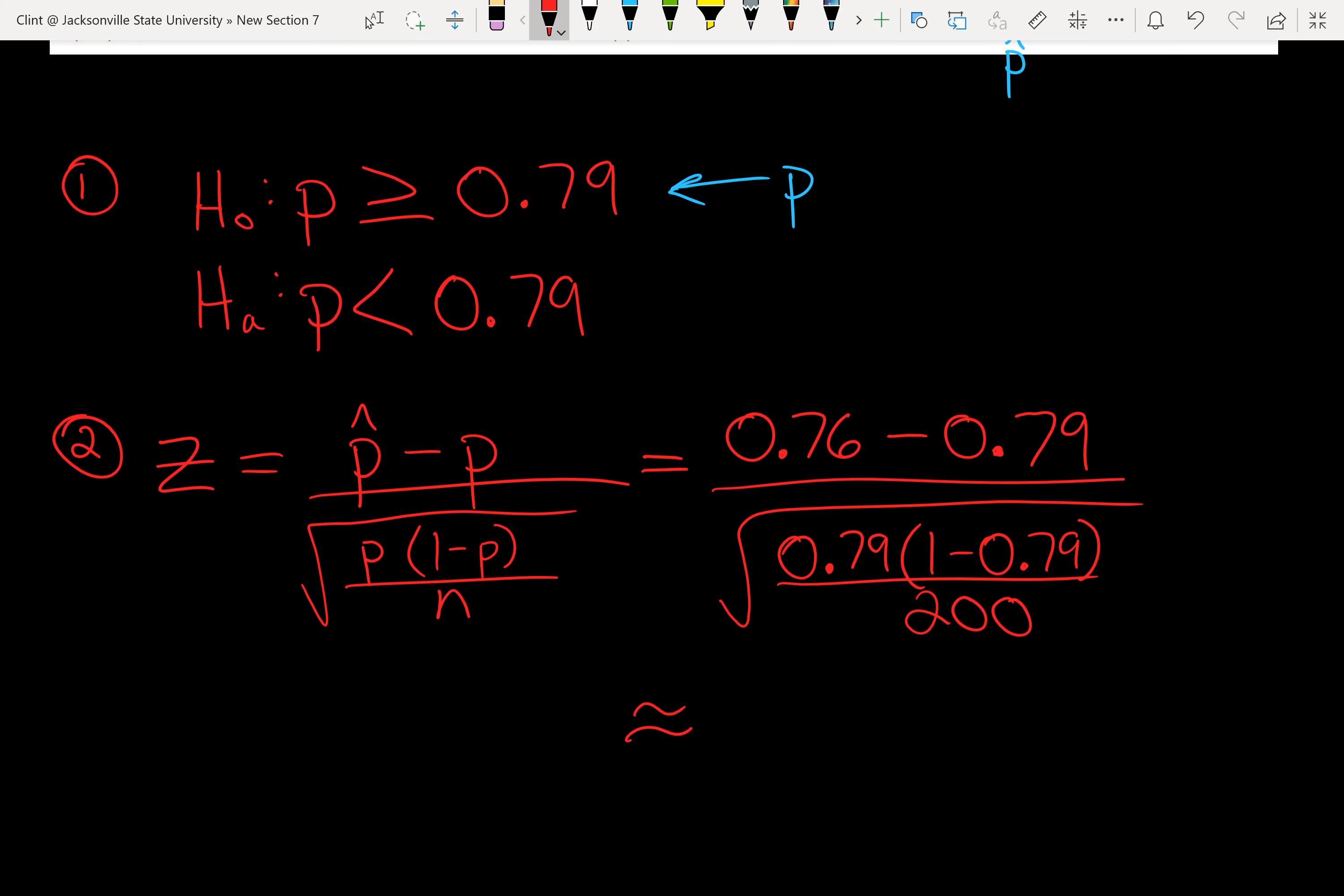I haven't calculated this yet, so the way I put this into my calculator is I'll do 0.76 minus 0.79, hit equal, and I'm going to divide that, hit the square root of 0.79 times parenthesis (1 minus 0.79), close, divided by 200, and then I'm going to close my square root. Here I get negative 1.04 when we round to two decimal places.